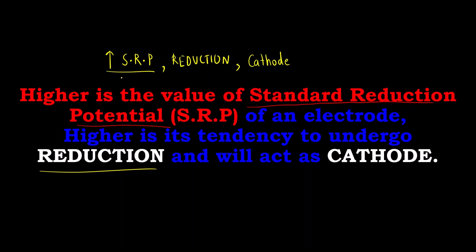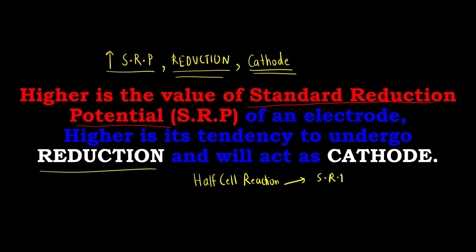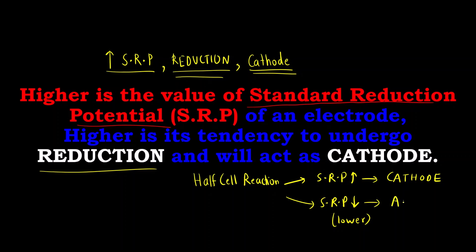More is the value of standard reduction potential, greater is its tendency to undergo reduction, and reduction takes place at the cathode. So, the half-cell reaction whose standard reduction potential is higher will act as a cathode. The other electrode whose standard reduction potential is lower will act as the anode, where oxidation is going to take place.